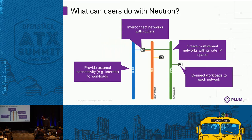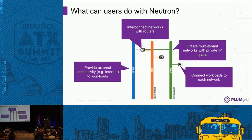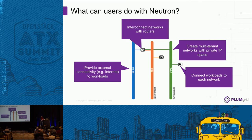What can users do with Neutron? There are a few basic operations you'll be able to explore today. The main thing is that you're going to be able to create networks. The assumption is that each project, each tenant environment, is its own isolated bubble. You'll be able to create any IP address you want to use in there. The hands-on guide will suggest some IP addresses, but it's your own private environment — you can do anything you want. That's the beauty of this model.